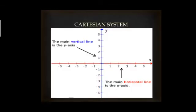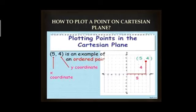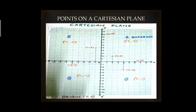In the Cartesian system, the horizontal line is the x-axis and the vertical line is the y-axis, and you can see the four quadrants. The quadrants are labeled 1, 2, 3, and 4 based on sign conventions. To plot a point, for example (5, 4), take 5 units on the x-axis and 4 units on the y-axis from the origin. The common point denotes the ordered pair (5, 4).